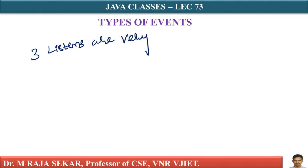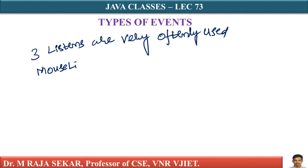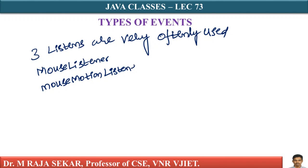What are those three listeners that are very often used? The first one is MouseListener. The second one is MouseMotionListener. The next one is KeyListener. We will try to understand all these listeners with the help of simple Java programs.